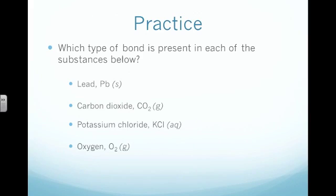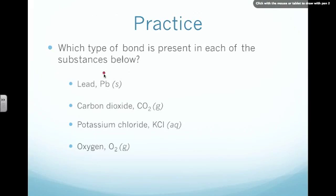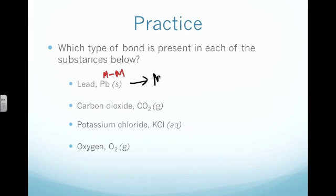Here's some practice determining which type of bond is present in each substance. For the first one, we have lead. We follow the same process and go to the periodic table. Lead, Pb, actually falls to the left of the staircase, so since it's to the left, we know it's a metal. It's not connected with anything but itself — metals with metals — and we know that a metal connected to another metal produces a metallic bond.